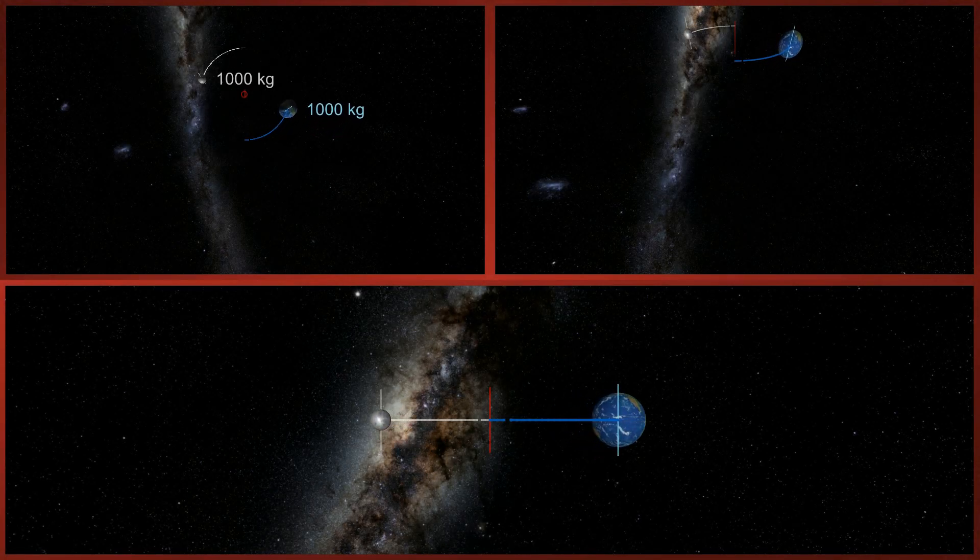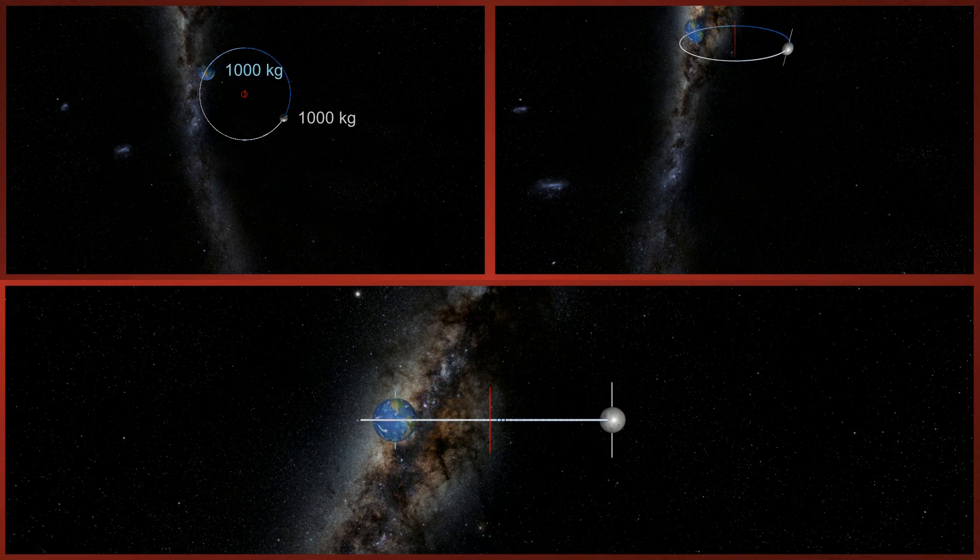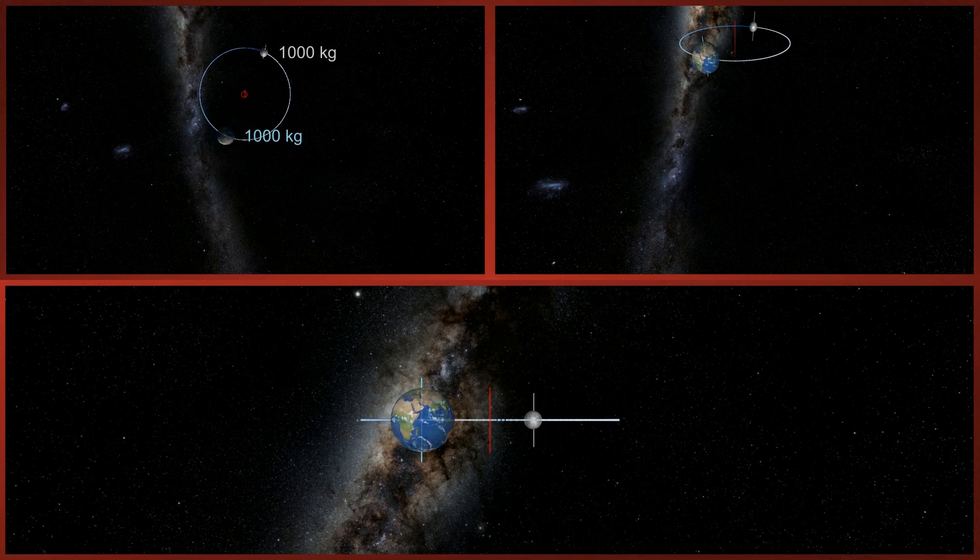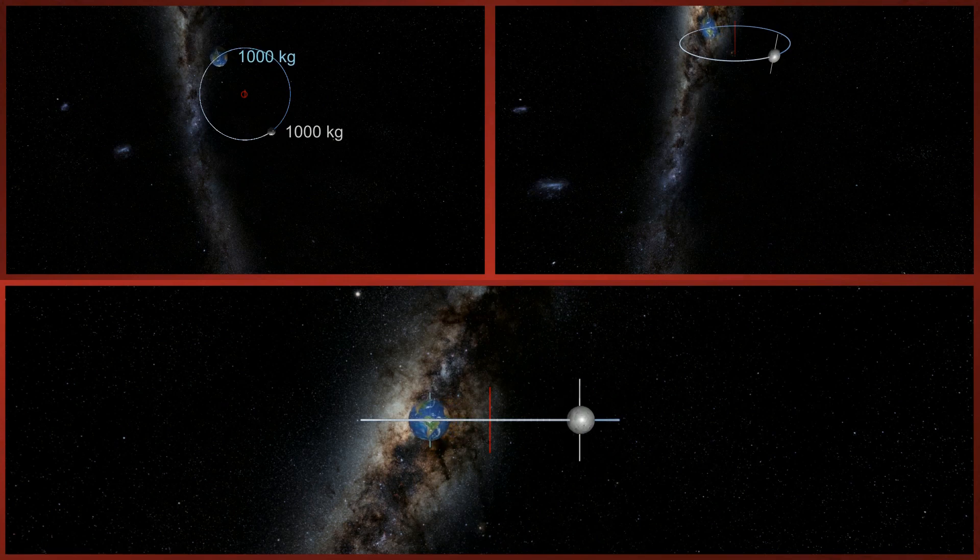However, the situation is quite different when the bodies have equal mass. We see that they now form a more compact system since they are orbiting around each other, rather than one around the other. The point around which they orbit is now exactly in the middle between them. This point is where their gravitational pull on each other balances out and is called the barycenter or the center of mass of the system.